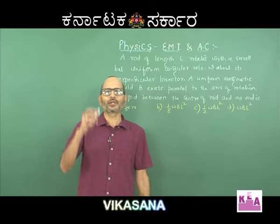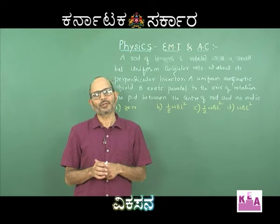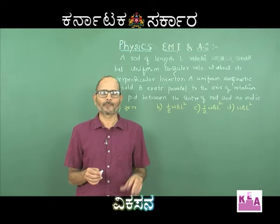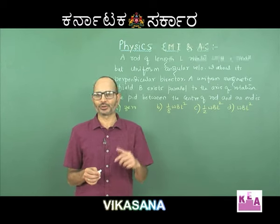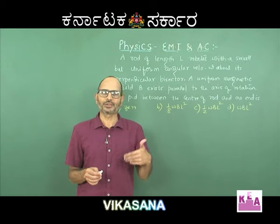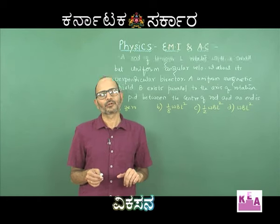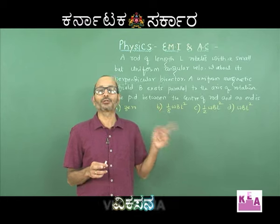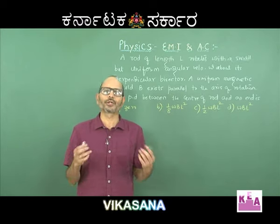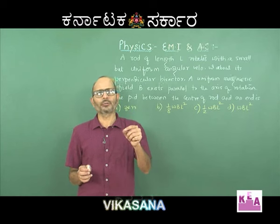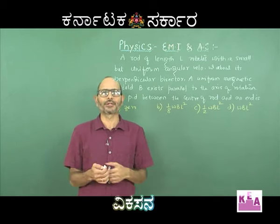Last time the rod was falling vertically downwards and the magnetic field was also vertically upwards, so there was no charge separation. Now, the beauty of this problem is the rod has velocity, and that velocity is continuously changing from one end of the rod to the other because the rod is rotating. Last time it was only translating — every particle had the same velocity in magnitude and direction. That is the definition of translatory motion.